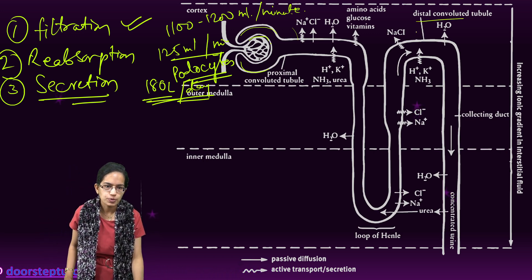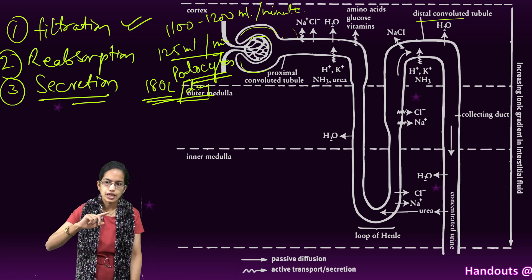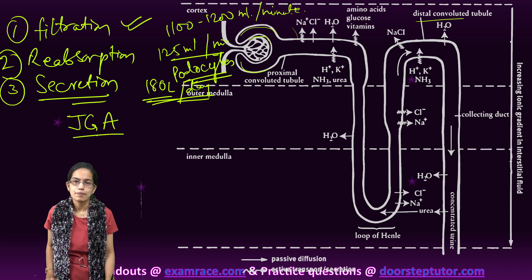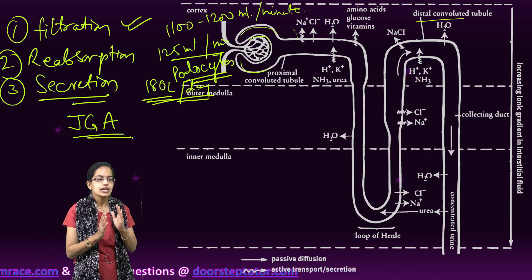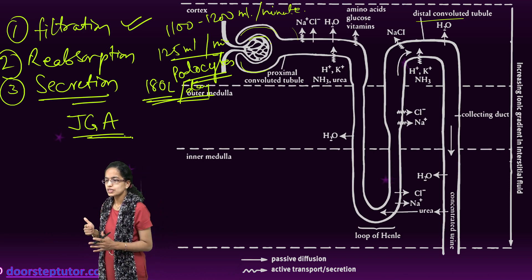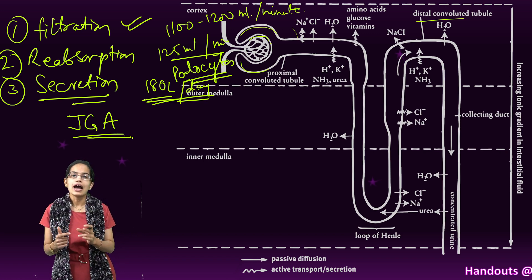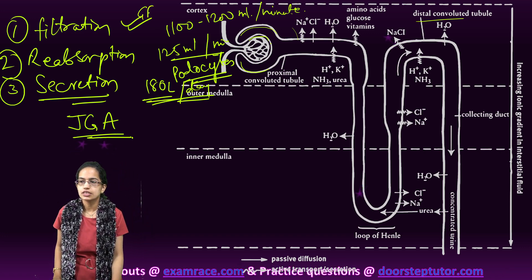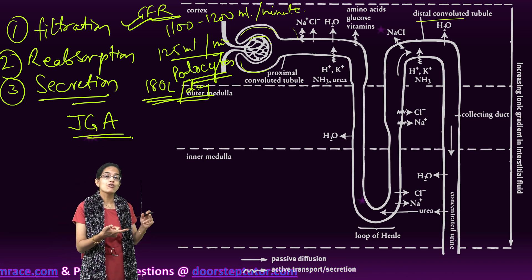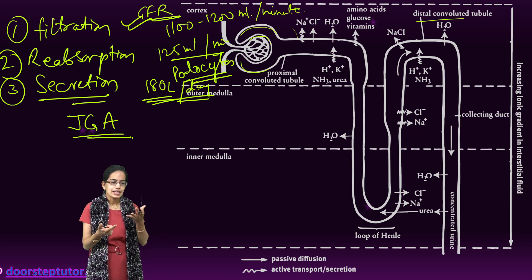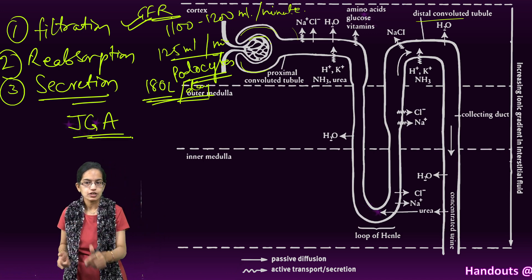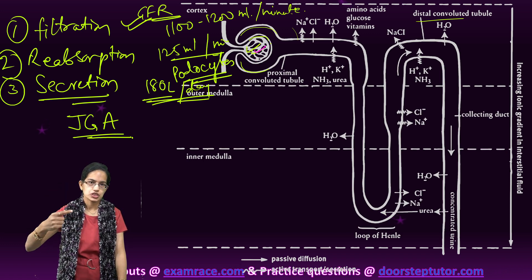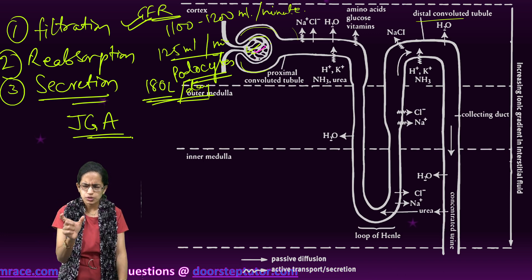Towards the distal convoluted tubule and the efferent arterioles there is the juxtaglomerular apparatus, which is an important sensitive region — a modification of the distal convoluted tubule and efferent arterioles system. When there is a fall in the glomerular filtration rate, the juxtaglomerular cells activate, stimulating blood flow in the glomerulus and bringing the filtration rate back to normal.